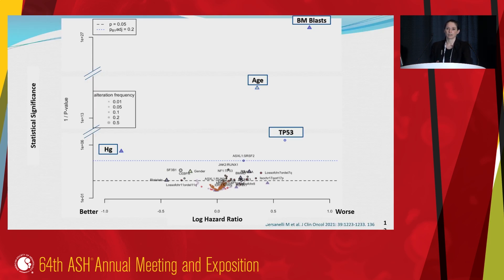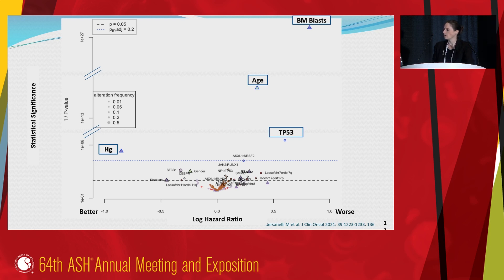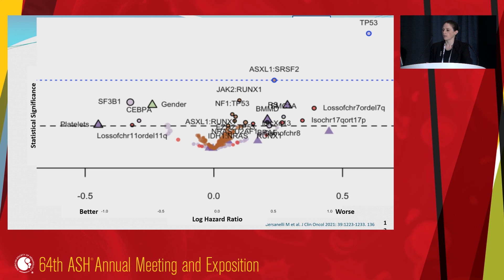Recently, we've had some insight from a variety of large data sets, including the EuroMDS set. A volcano plot published in the supplementary data of Dr. Bersanelli's recent paper emphasizes statistical significance on the y-axis and log hazard ratio on the x-axis. Things on the left are associated with better prognosis, while things on the right — like higher bone marrow blast percentage, higher age, and the presence of TP53 mutations — are associated with worse prognosis. Mutational events fall in a lower statistical significance area but have significant impact on survival. On the left, you can see the impact of SF3B1 mutations and platelet counts. On the right, comutational signatures like ASXL1 and SRSF2 are associated with poorer risk, and TP53 is strongly associated with adverse risk at high statistical significance.